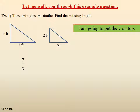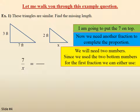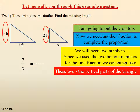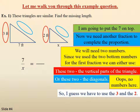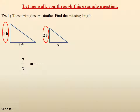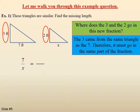I'm going to put the seven on top, so I'll use seven over X. Now we need another fraction to complete the proportion. Since we used the two bottom numbers for the first fraction, we can use the two numbers in the vertical part of the triangle — the three feet and the two feet. Where do the three and the two go in this new fraction? The three came from the same triangle as the seven, therefore it must go in the same part of the fraction.